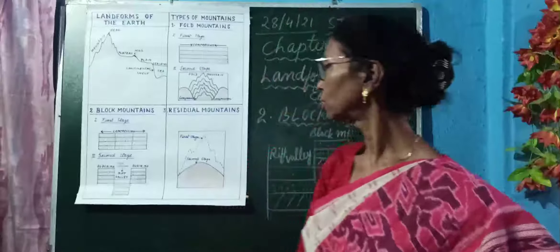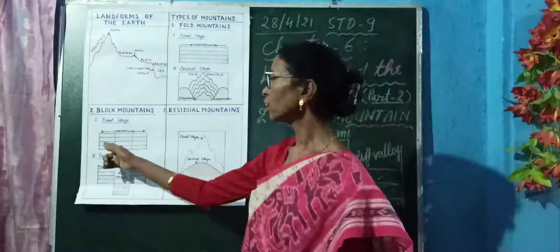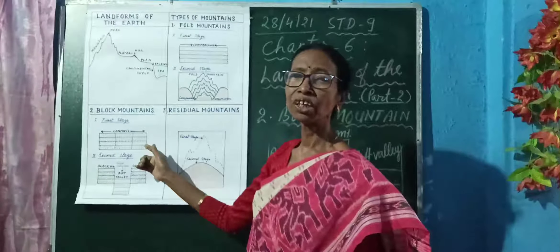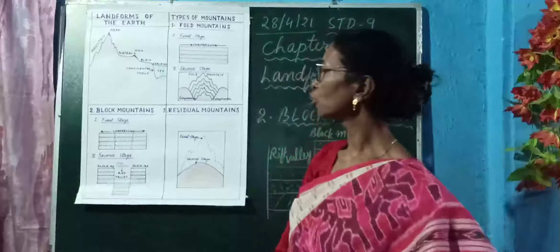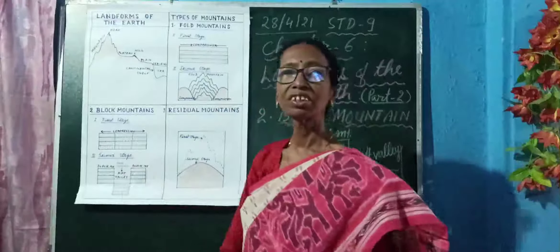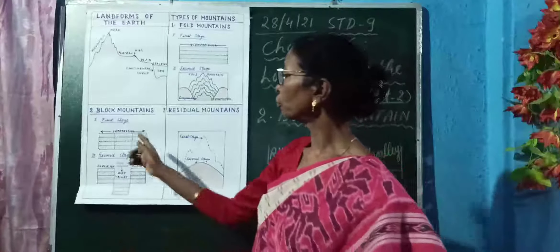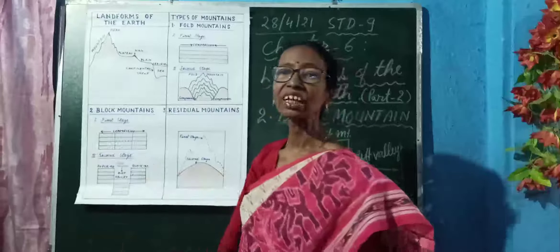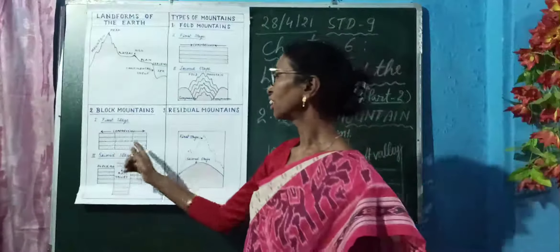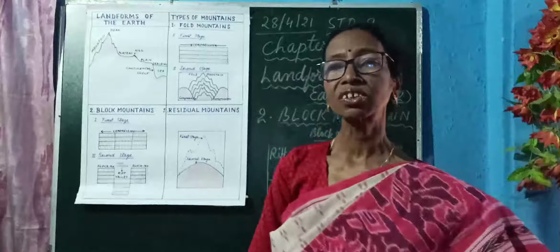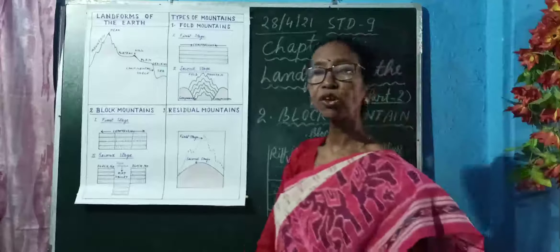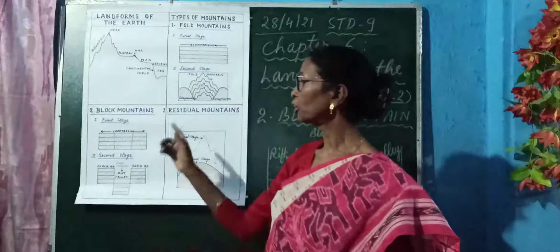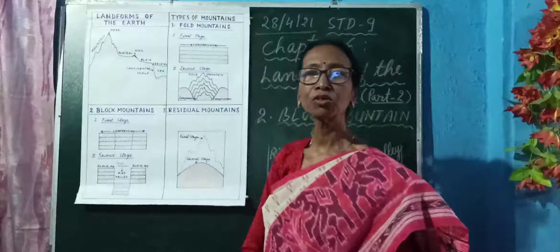Block mountains are formed due to tensional and compressional forces. In areas of the earth's crust where the layers are made of hard rocks, instead of bending, they form cracks. Due to compressional forces in different directions, parallel cracks are formed in the earth's crust. Instead of bending, faulting takes place, and because of faulting, these parallel faults are formed.